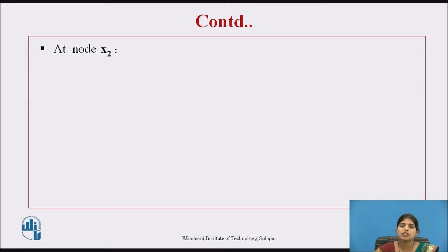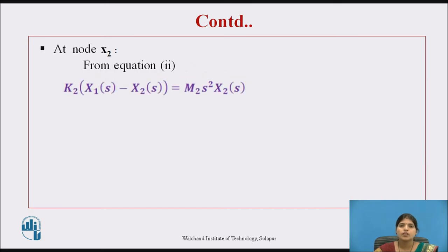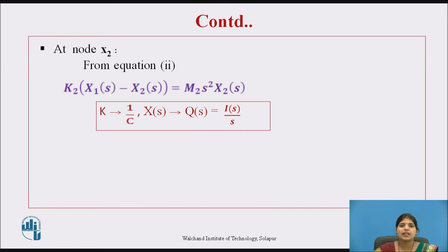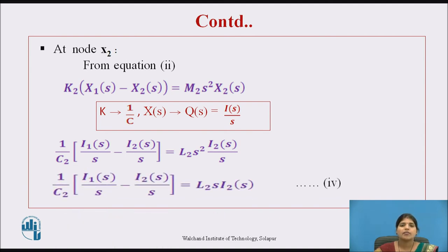At node X2, from Equation 2, we again replace the terms: K by 1/C and X(S) by I(S)/S. The equation becomes: (1/C2)·(I1(S)/S − I2(S)/S) = L2·S²·I2(S)/S. After simplification, we get Equation 4 at node X2.